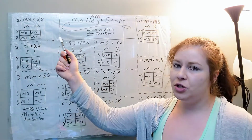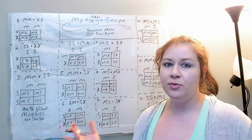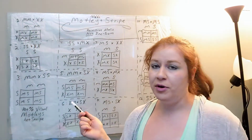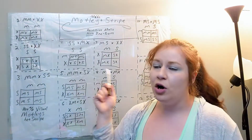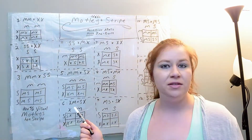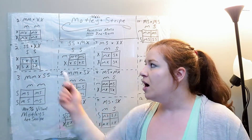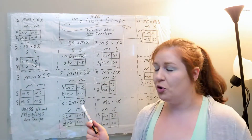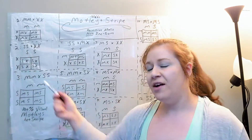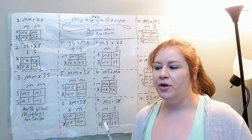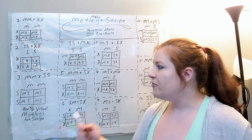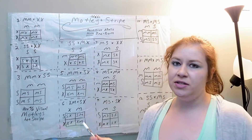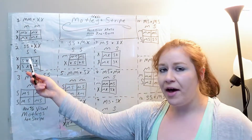I'm going to start with the first two basic pairings, similar to what we did in the recessive video. A homozygous Motley to a normal gives you all normals that are Het for Motley — that's something simple from the first episode. And it's the same with the second pairing: a homozygous Stripe to a normal gives you normals that are Het for Stripe. I wanted to mention those two so that after all of this you wouldn't wonder how it reacts when it's by itself.